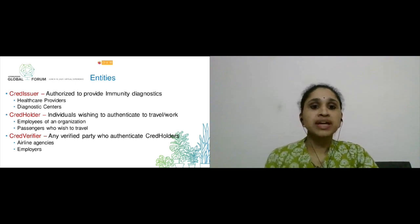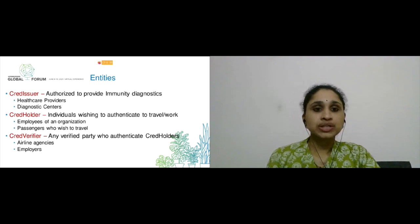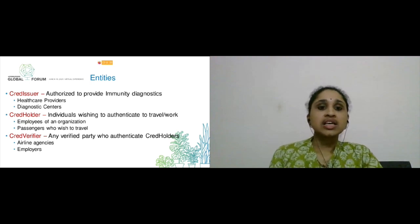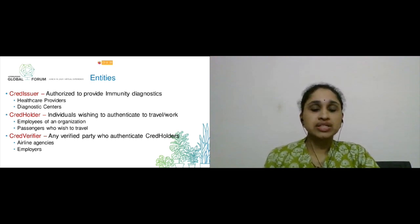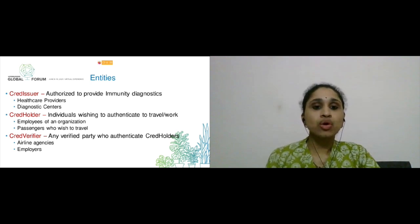So our system has three main entities: credential issuer, credential holder, and credential verifier. The credential issuer has authority to perform immunity tests and they also issue certificates to the users. Examples are healthcare providers or diagnostic centers. Credential holders are individuals who wish to authenticate themselves to travel or work. Examples are employees of a company or passengers who wish to travel. Credential verifiers are parties who authenticate the credentials of the credential holders. Examples are employers or airlines.